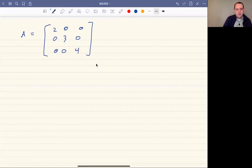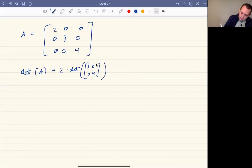If you expand along any row or column, it doesn't matter. But if you want to find the determinant, det(A), let's just expand along the first row. It's going to be 2 times the determinant of [3, 0; 0, 4] minus 0 times whatever determinant.